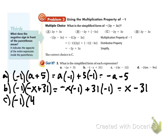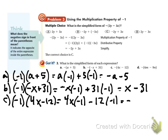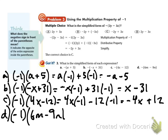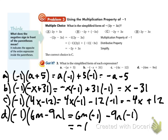Problem c: change that to a negative 1 out front. 4x times negative 1 minus 12 times negative 1 turns into negative 4x plus 12. And finally, problem d: turn that into a negative 1 out front times (6m minus 9n). So 6m times negative 1 minus 9n times negative 1 gives negative 6m plus 9n.